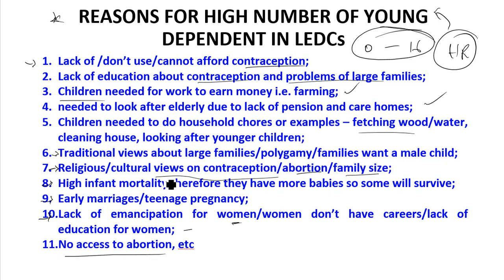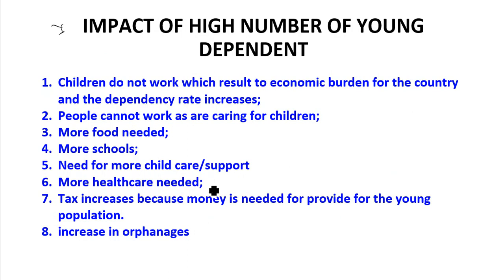These are the reasons for high birth rate and therefore for a high number of young dependent population. The impacts include: children do not work, resulting in economic burden and an increased dependency ratio; people cannot work as they are caring for children; there is a need for more food, more schools, more childcare support, and more healthcare; taxes increase to provide for the young population; and there are increasing numbers of orphans.